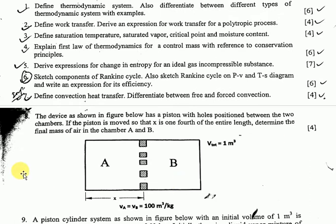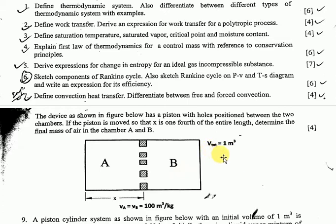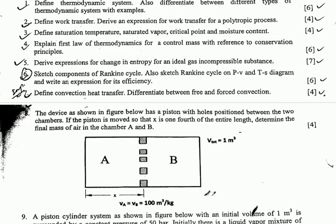Question number eight: a device shown in the figure has a piston with holes in a position between two chambers. If the piston is moved so that x is one-fourth of the entire length, determine the final mass of air in chamber A or B. Given: total volume is 1 cubic meter, specific volume of A and B is 100 cubic meters per kg.